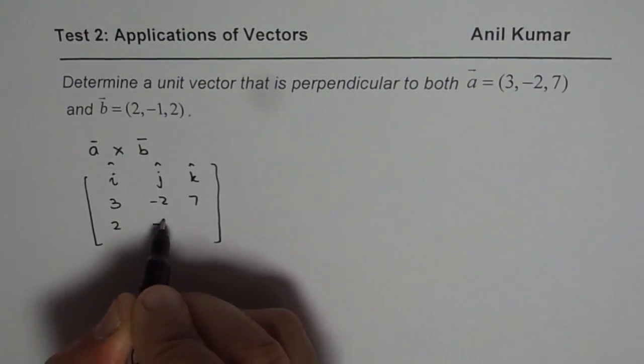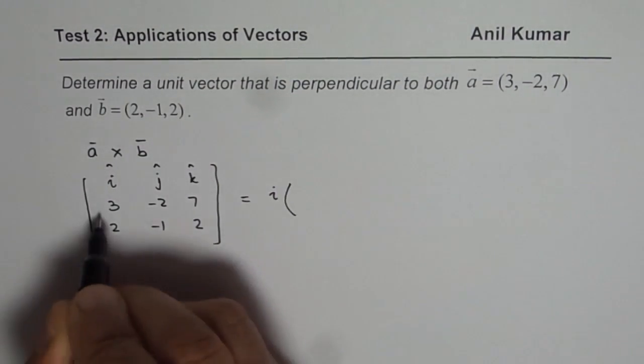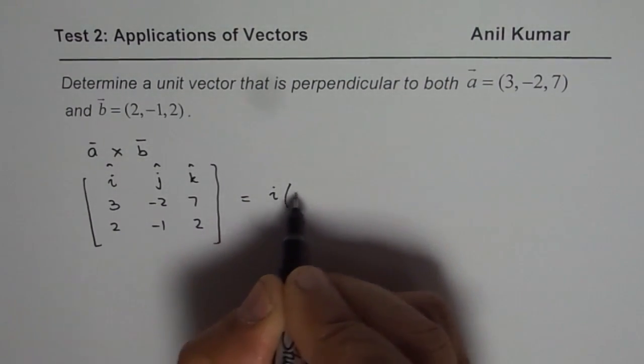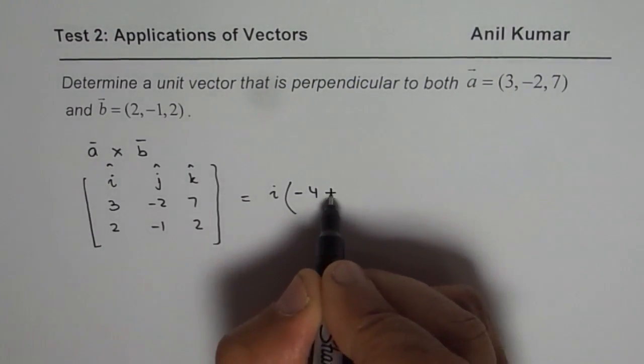So we have 2, -1, and 2. So that gives me i as -2 times 2, which is -4, minus 7, which is plus 7.